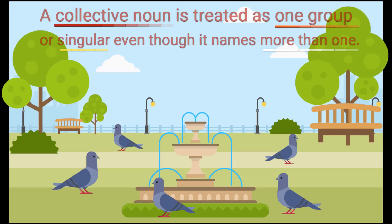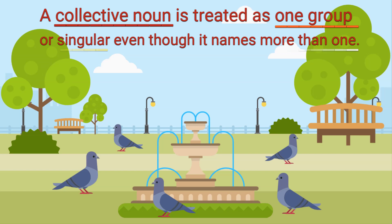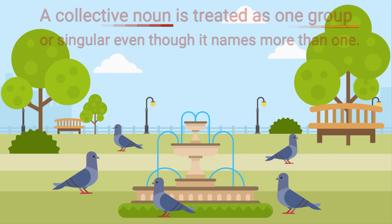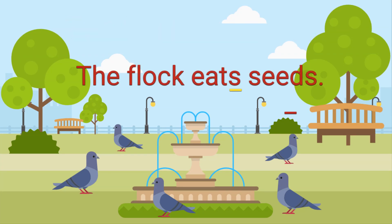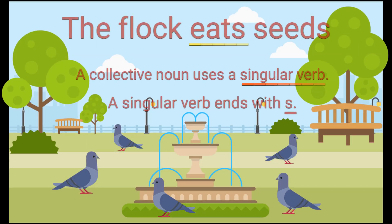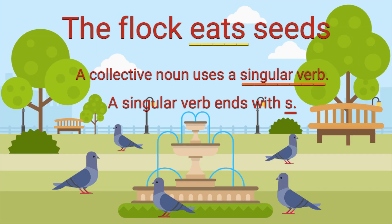A collective noun is treated as one group, or singular, even though it names more than one thing. So instead of saying the flock eat seeds, you have to say the flock eats seeds. A collective noun uses a singular verb, and a singular verb ends with an S.